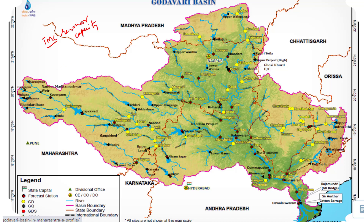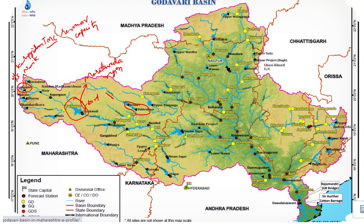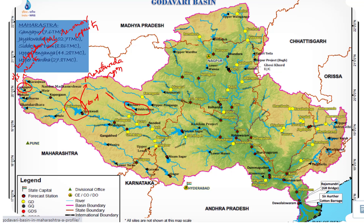The Gangapur Reservoir is an important project located on the Godavari River that supplies drinking water to Nasik, though it has now silted up and a new P Dam has been constructed. Jayakwadi Dam is located in Aurangabad district and supplies water to the drought-prone Marathwada region; the surrounding area is a bird sanctuary. Siddheshwara Dam is on the Purna River, a tributary of Godavari. Other important reservoirs in Maharashtra include Upper Painganga and Upper Varda.